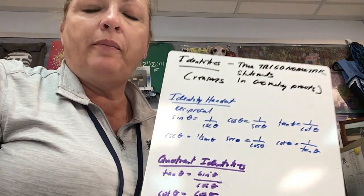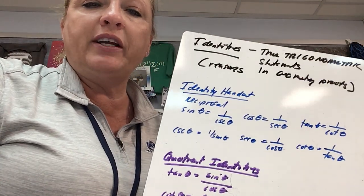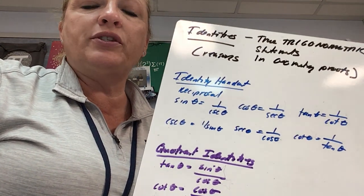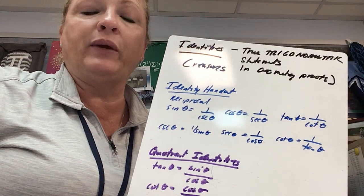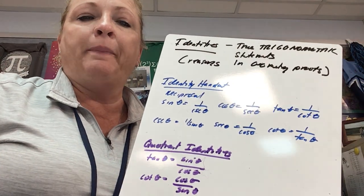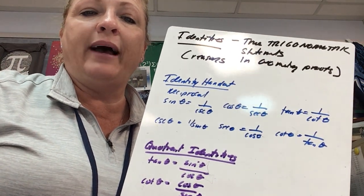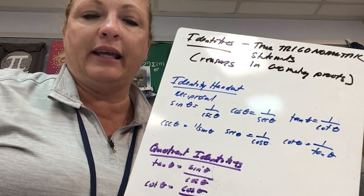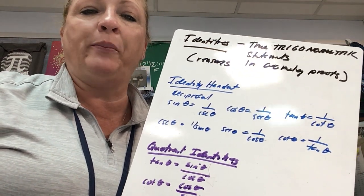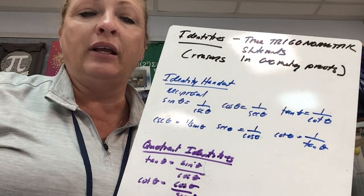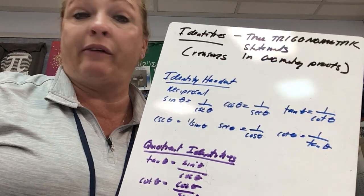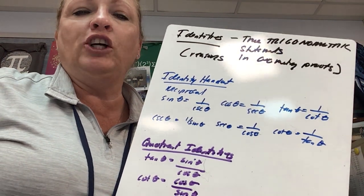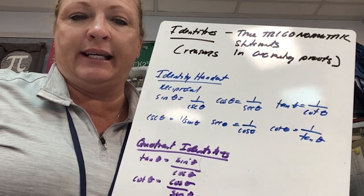Hello, we are beginning our unit on trigonometric identities. Identities are true statements about trigonometric relationships. I would like you to have out or print — I attached an identity handout. This is something that you probably will want a hard copy of to use as a reference. I would suggest that.